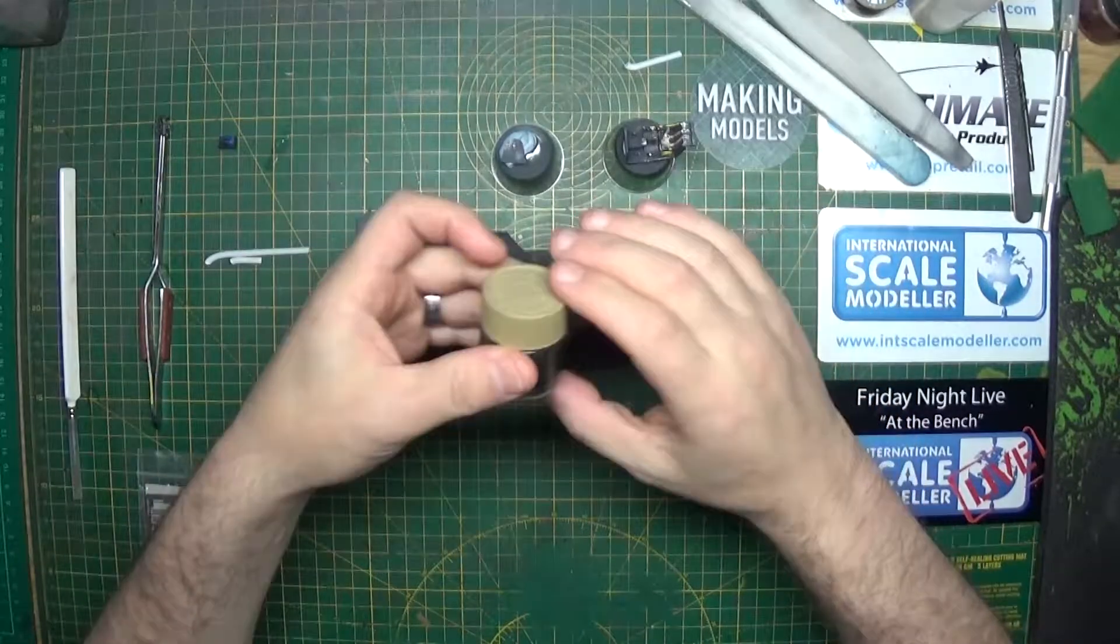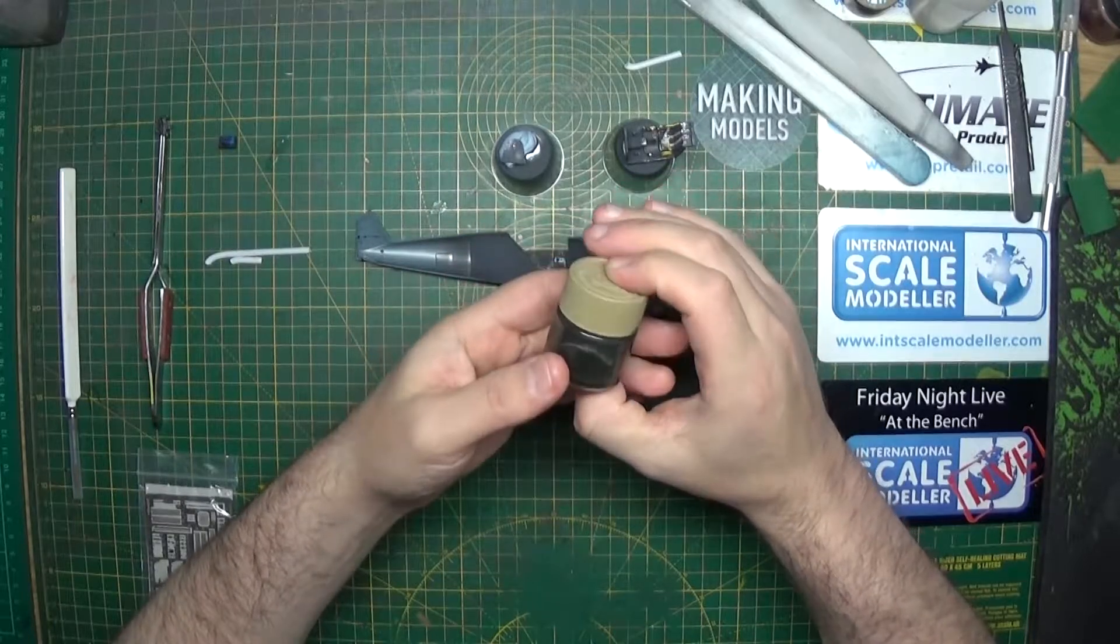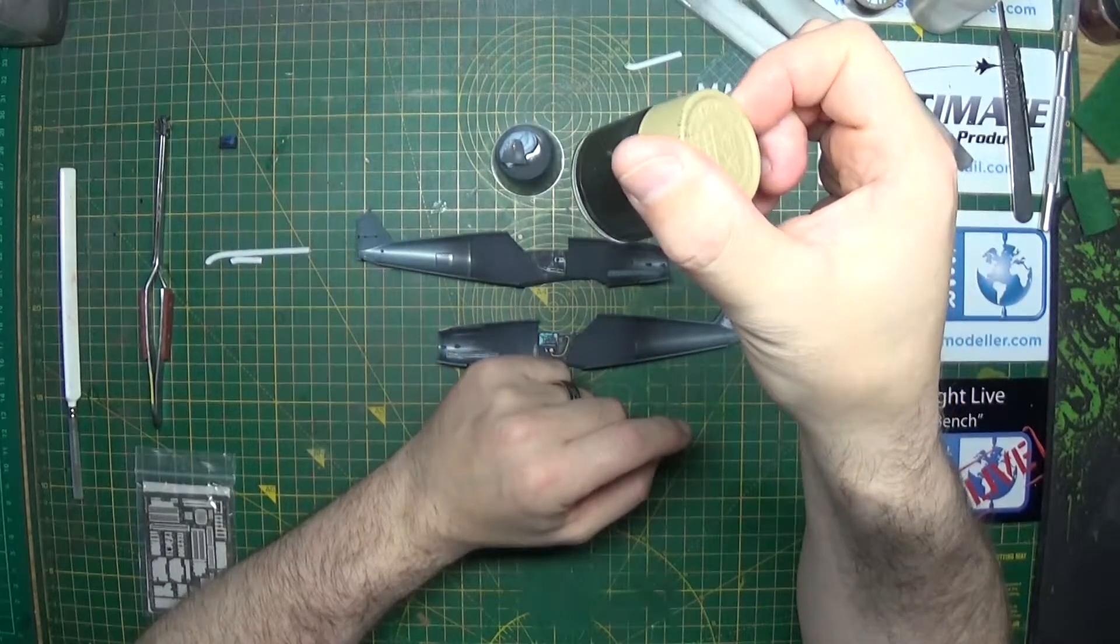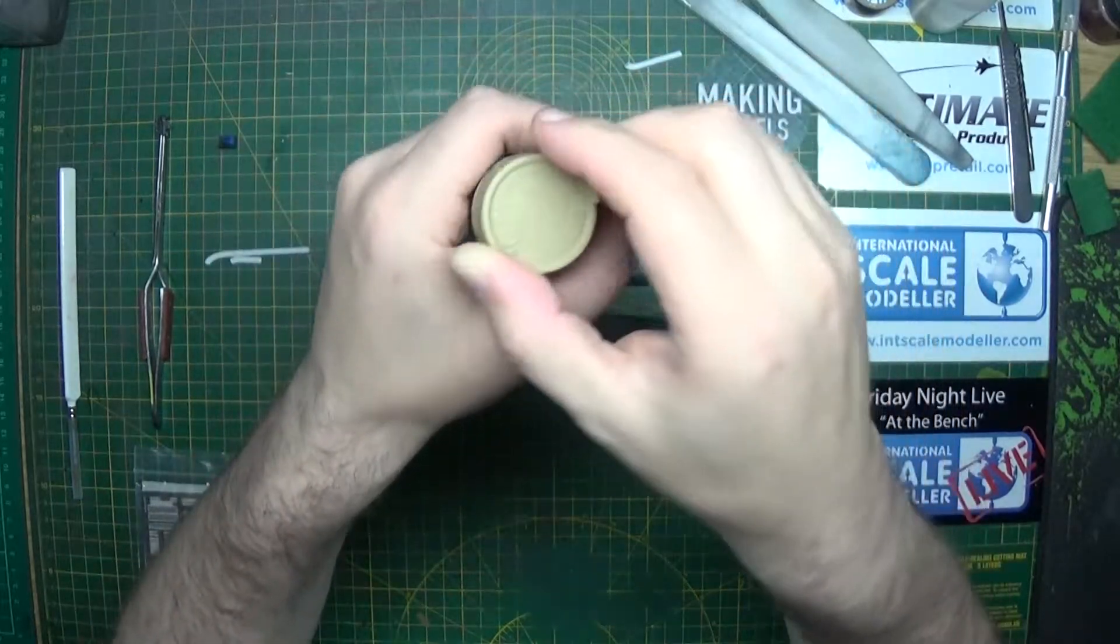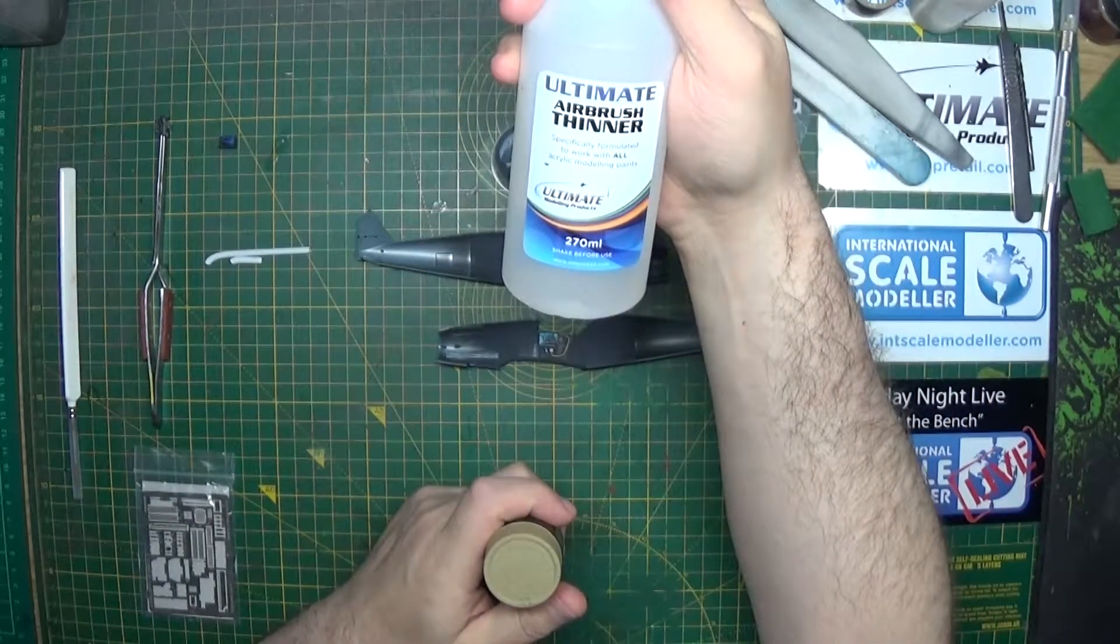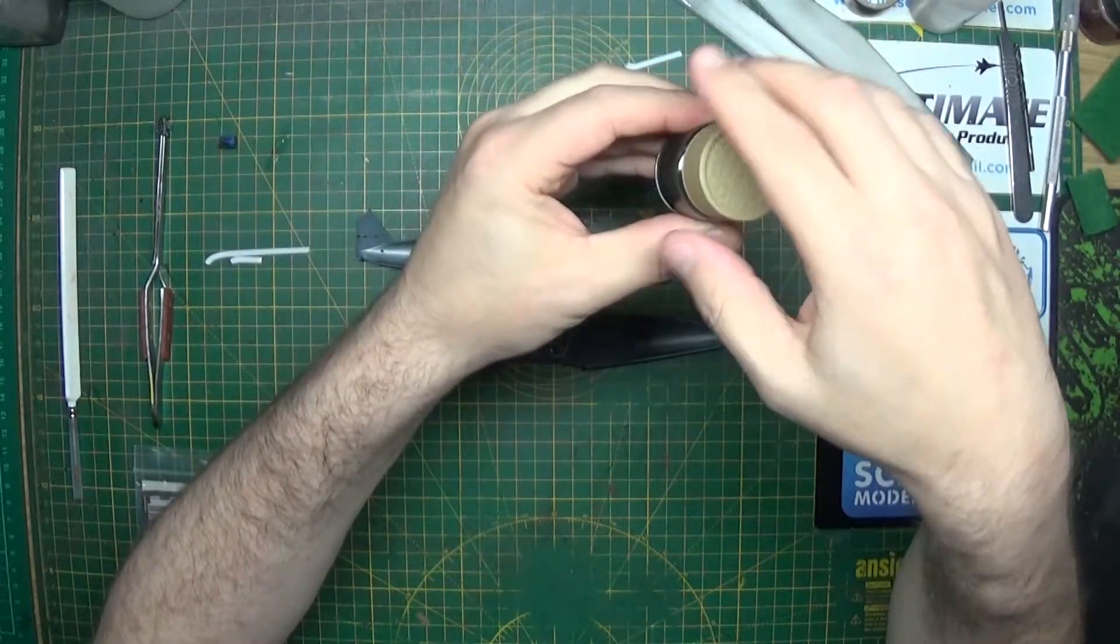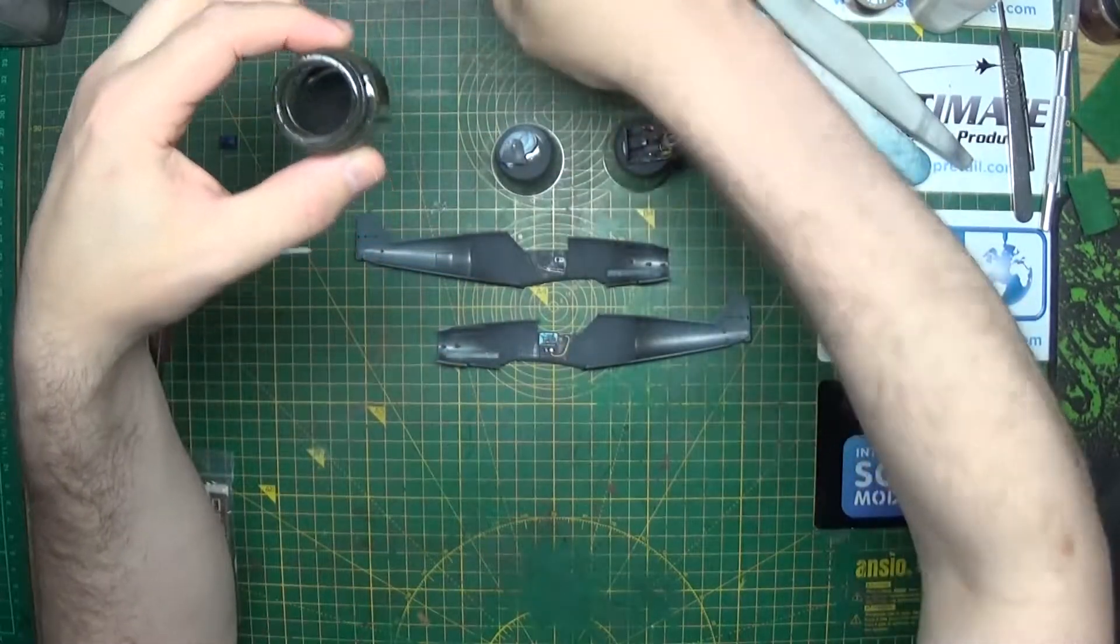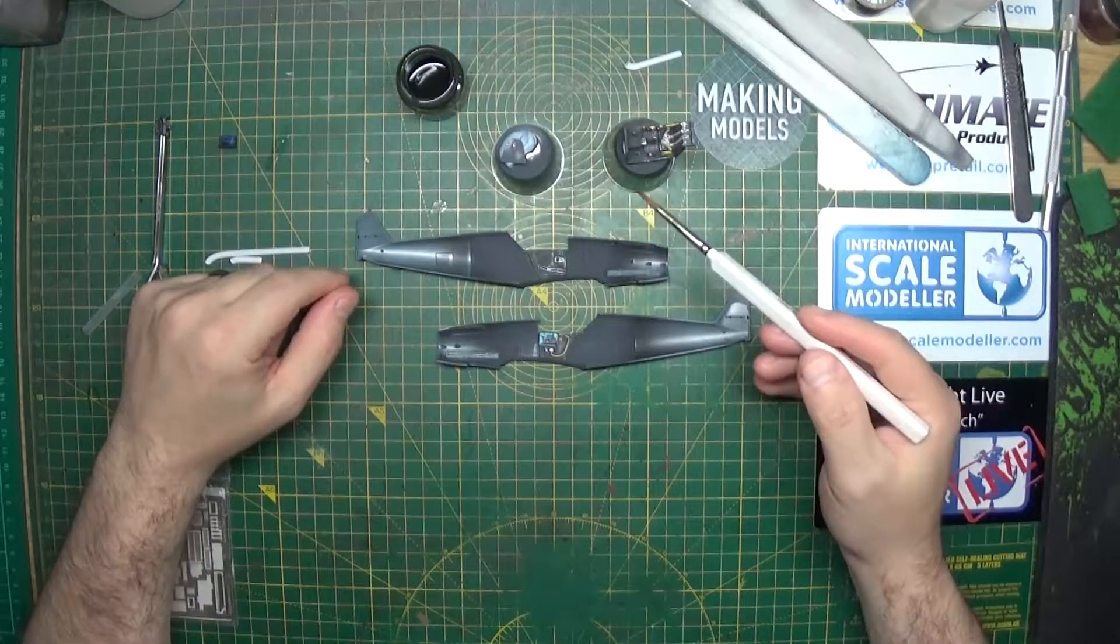So what we're going to do now is, if you can remember we made this filter wash when we were making the King Tiger, so we are going to use this which is made from NATO Black Tamiya with just some airbrush thinner. It's quite a large ratio of thinner to paint, just to make a filter rather than a wash. This stuff is really thin and all we're going to do is paint it over the top of all our parts.